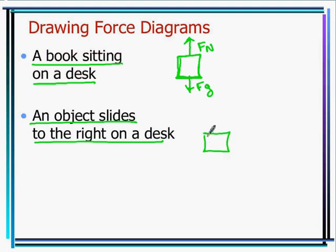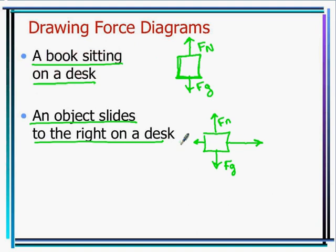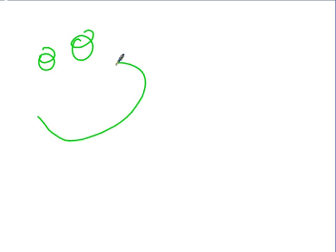Second practice problem: an object slides to the right on a desk. Draw a square. Gravity still pulls down, so force normal equals force of gravity — equal arrows up and down. Since it's moving right, the applied force arrow to the right must be greater than the friction arrow to the left. There's always friction opposing motion, but it's less than the applied force. Have a wonderful day!